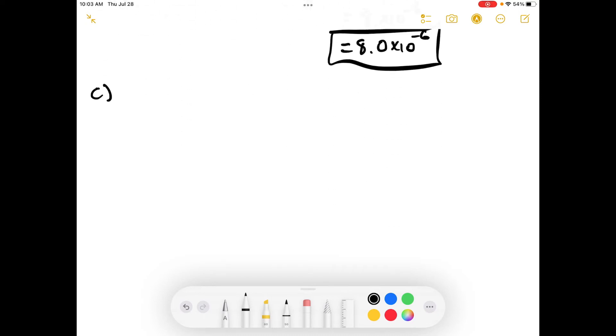So part C. 2.365 plus 125.2. Lining that up. If we estimate this, it equals 125 plus 2. So 127 estimated.